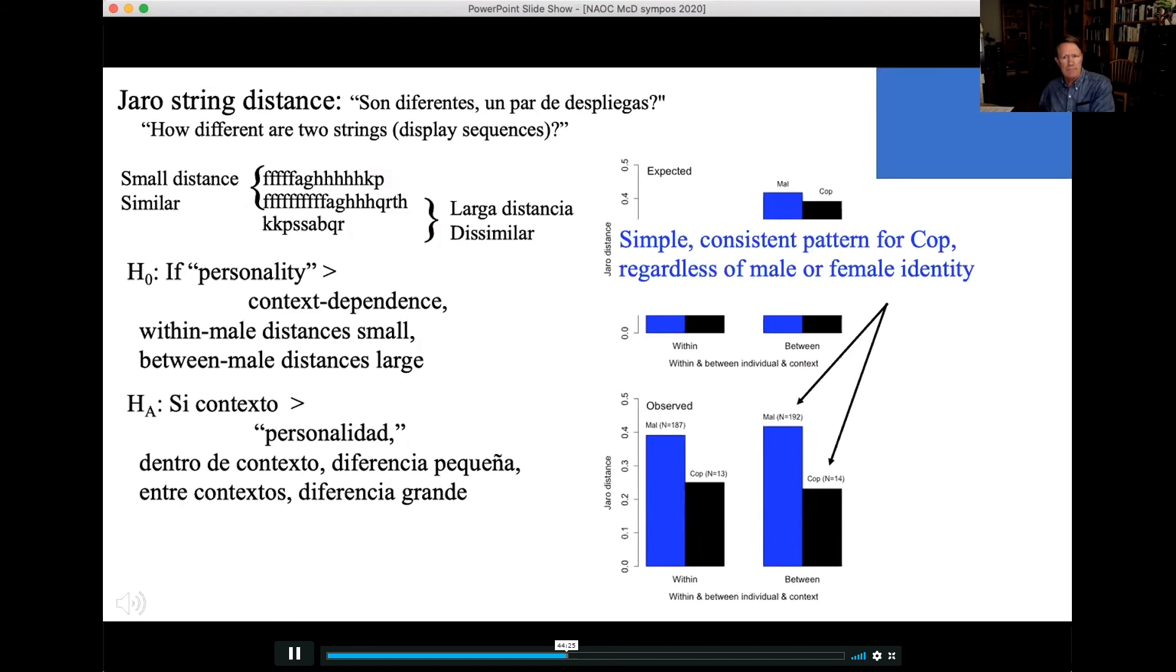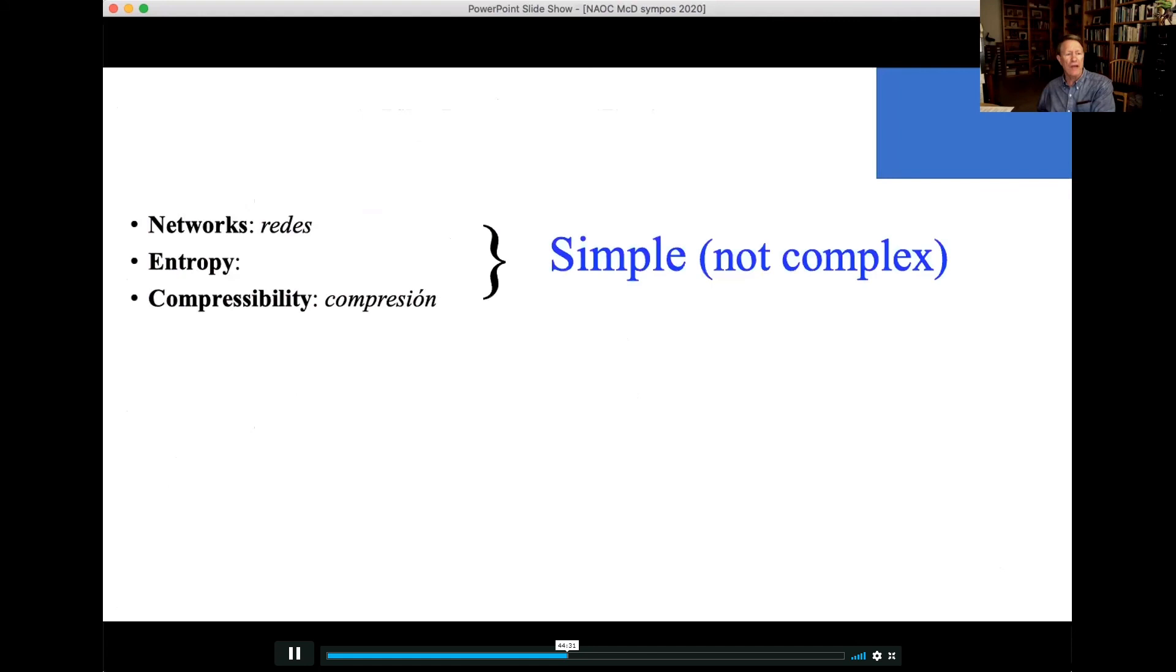A pattern that you follow. So, networks, entropy, compressibility, simple, not complex. Jaro, variation by context, not personality.